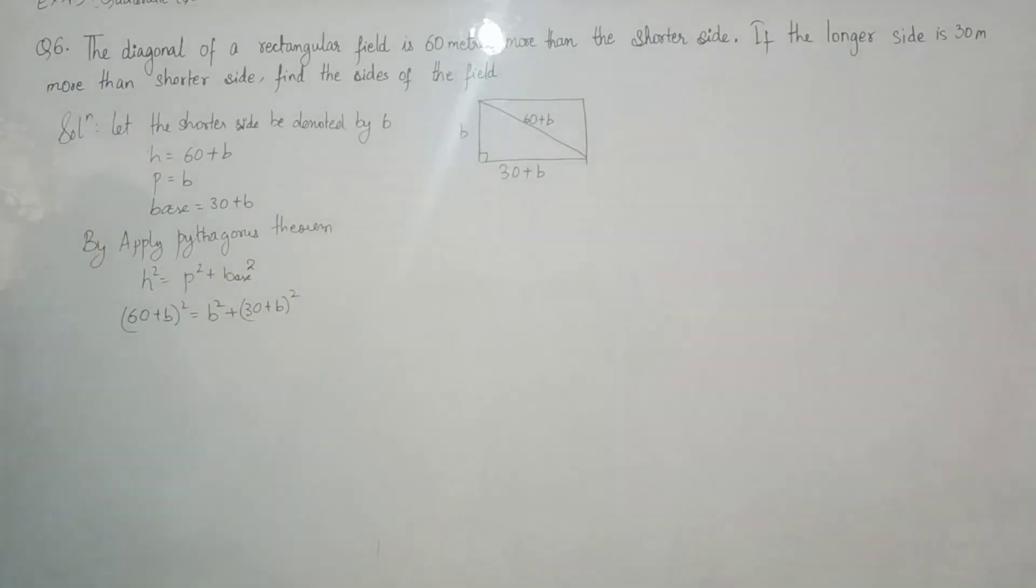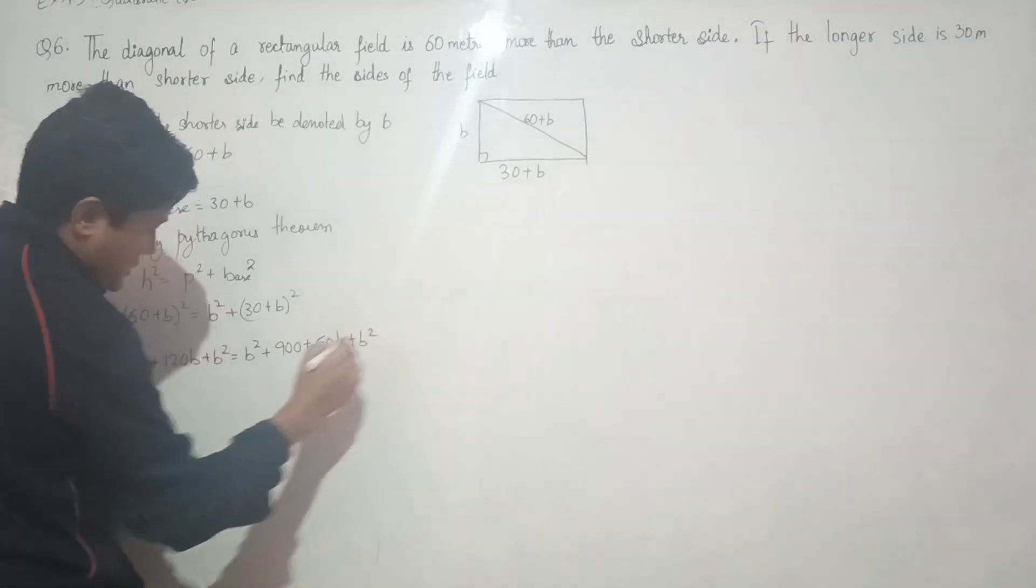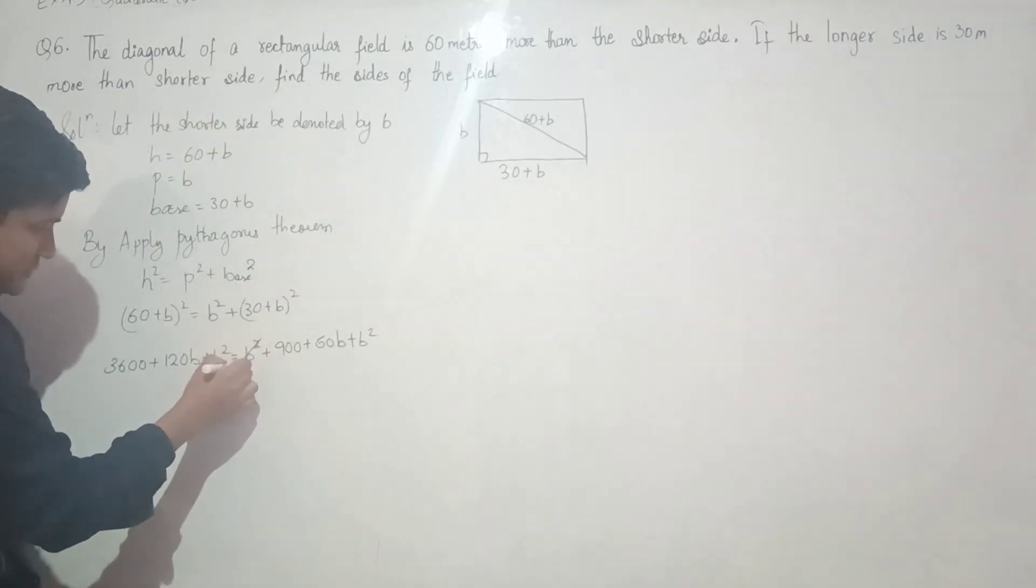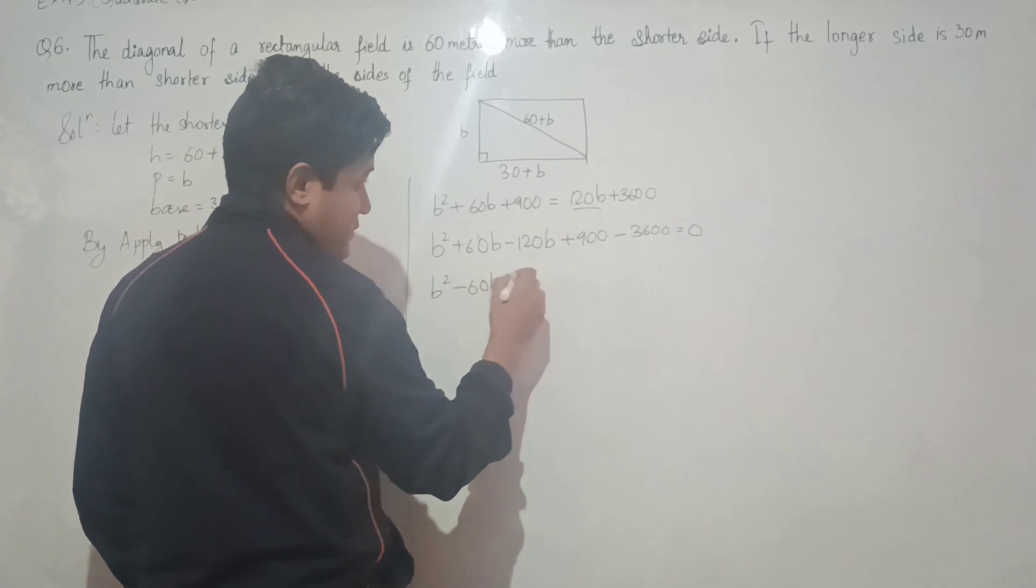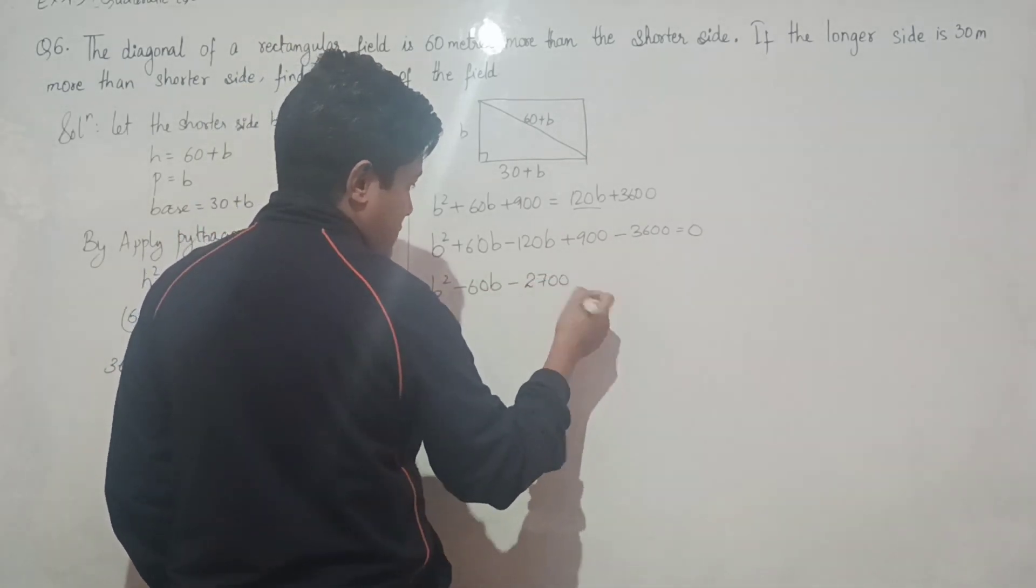Expanding: 3600 plus 120b plus b squared equals b squared plus 900 plus 60b plus b squared. You can see b squared will go to the next side and get cancelled.